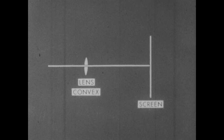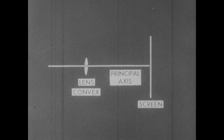This line is called the principal axis of a lens. It passes through the centers of curvature of the lens surfaces.